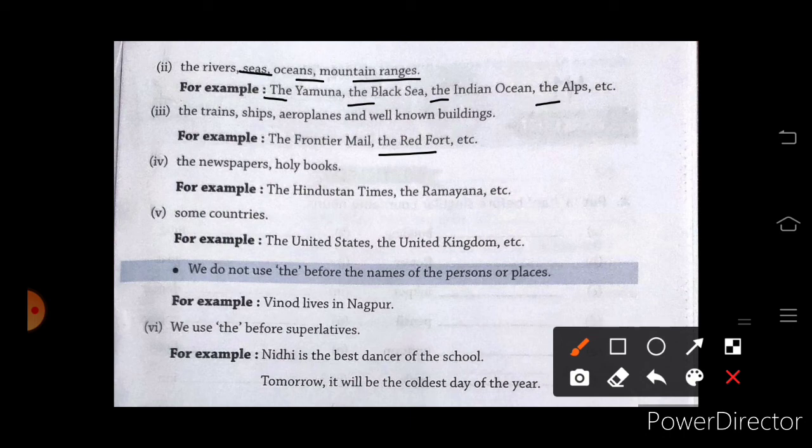Next one, newspaper names ho. The Hindustan Times, ya phir koi holy book ho. The Ramayana, the Gita. For some countries, like the United States, the United Kingdom, etc.